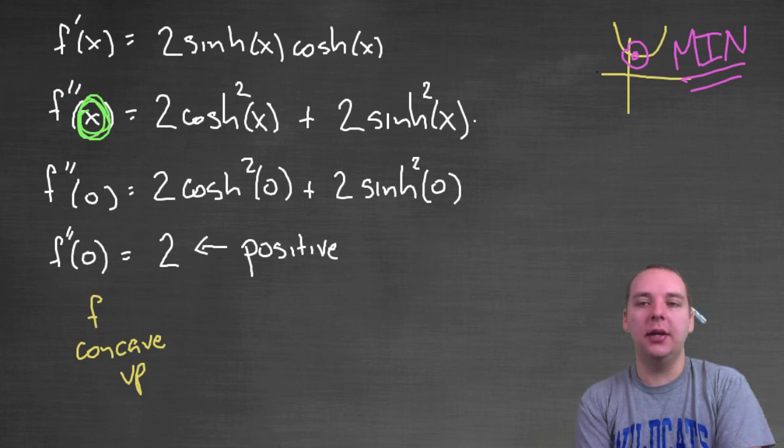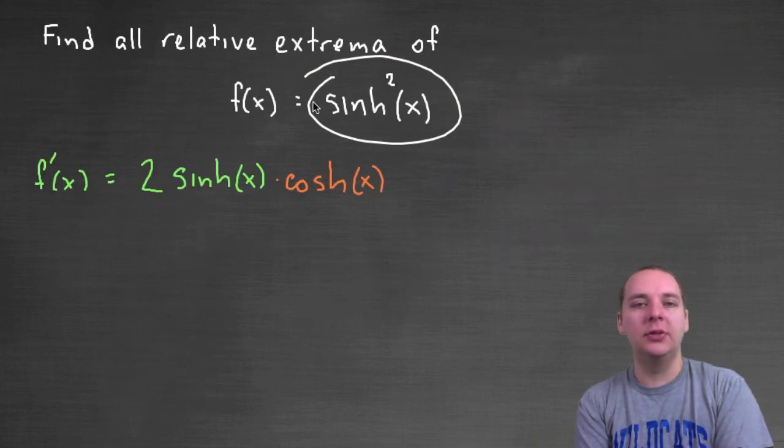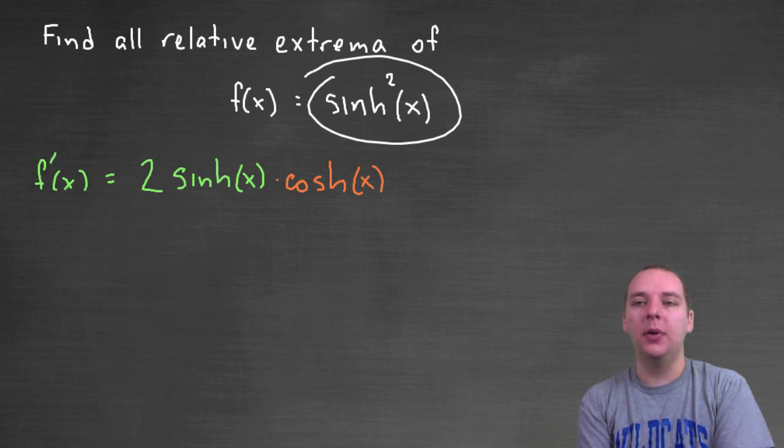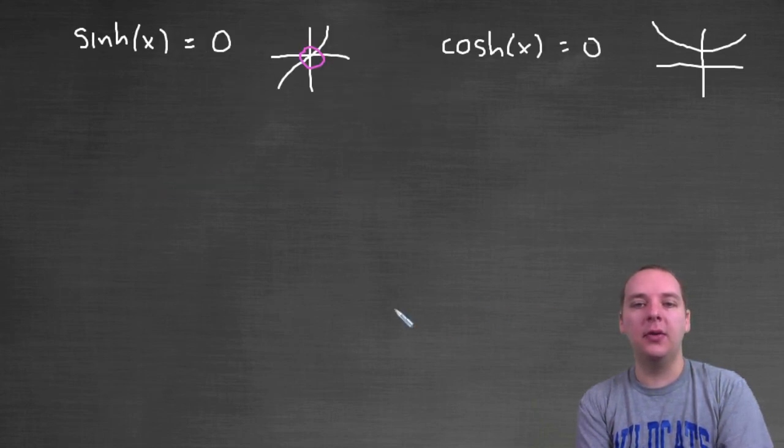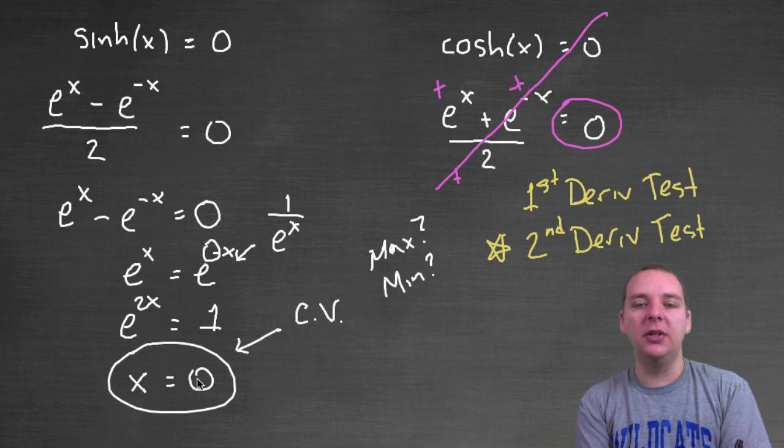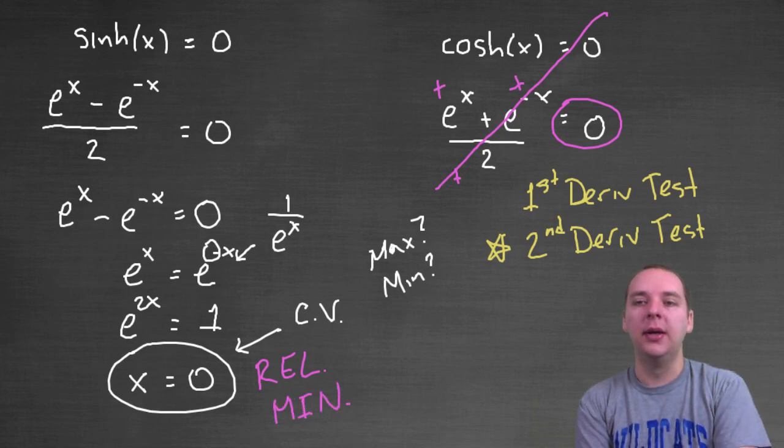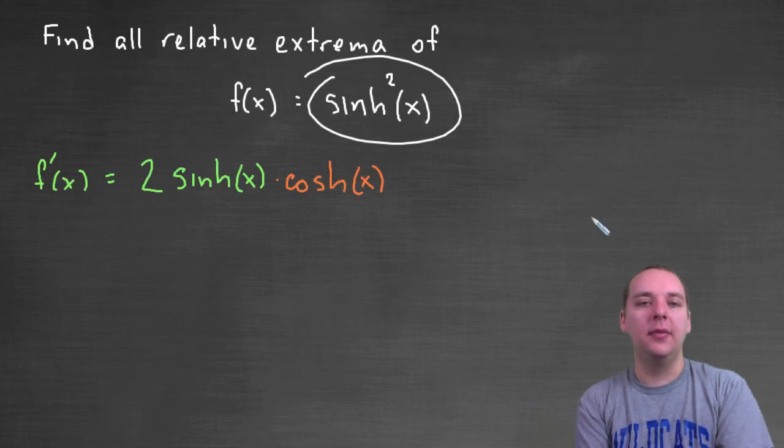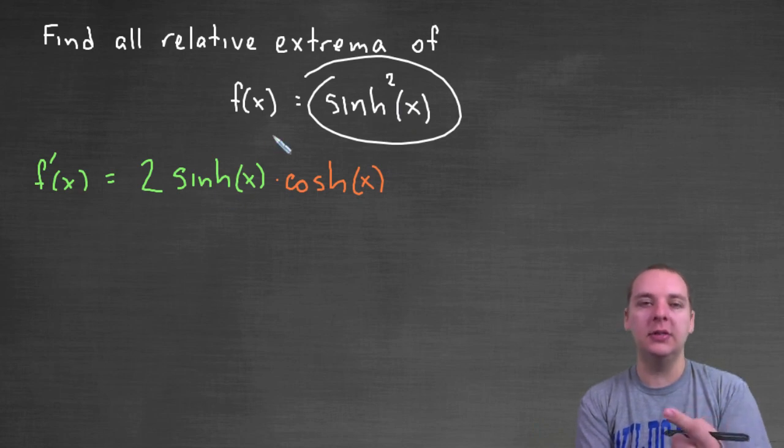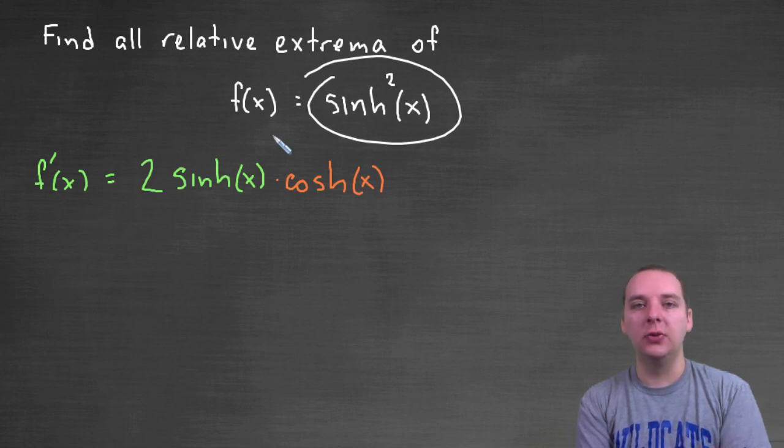That tells us we're done. We found the extrema of this guy. There is no maximum, but because we found a critical value at zero, and we checked it out, we verified it, we did the second derivative test, this critical value at zero turns out to be a relative min. That's all the extrema that this particular function has. If you had a different hyperbolic function, the process really wouldn't change a lot. You would need to find critical values, and then use either the first or second derivative test.